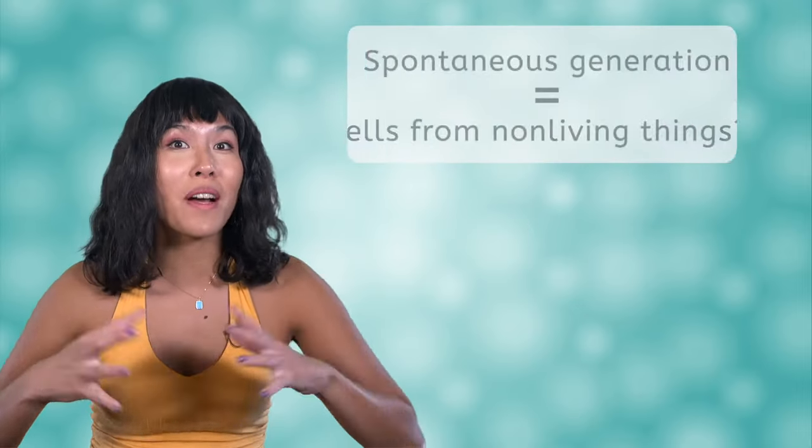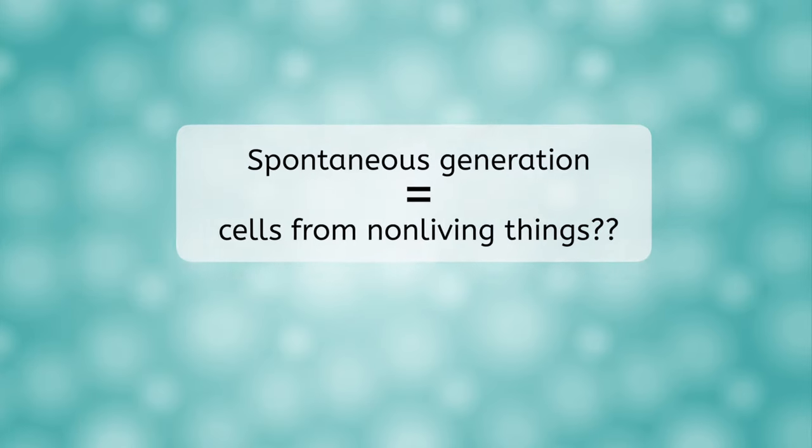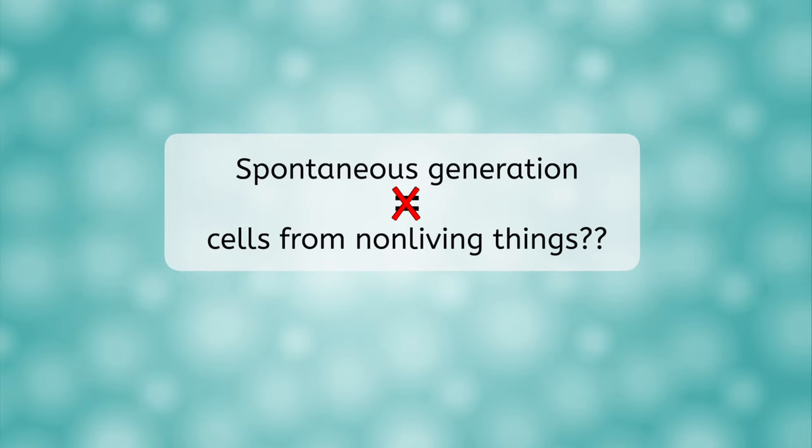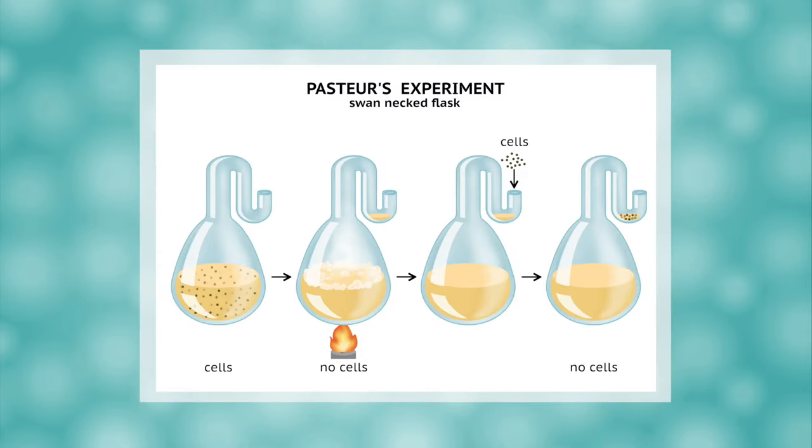But where do cells come from? Scientists once thought that life could arise through spontaneous generation, which is the idea that cells come from non-living things. But this idea was finally disproved by Louis Pasteur in 1858. You can read more about his swan-necked flask experiment, which is considered to have settled the debate once and for all in the lesson PDF. If life must come from life and living things are made of cells, do all cells have to come from other cells?